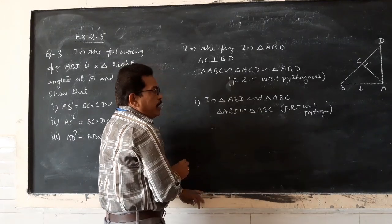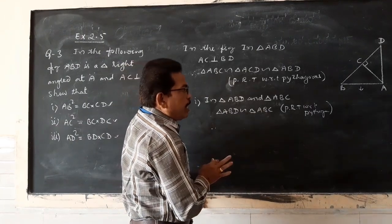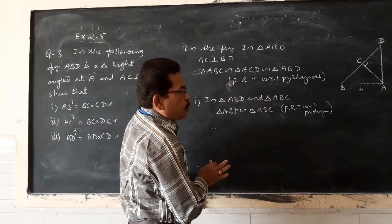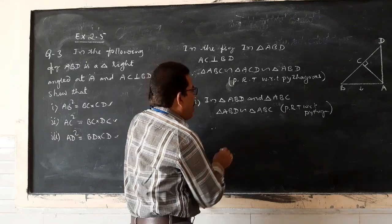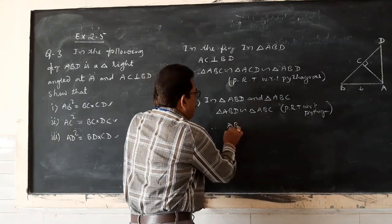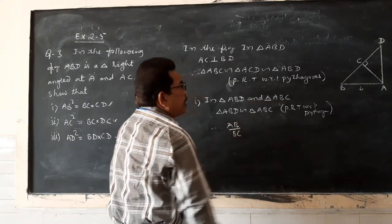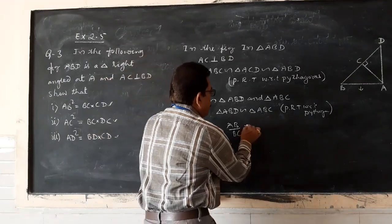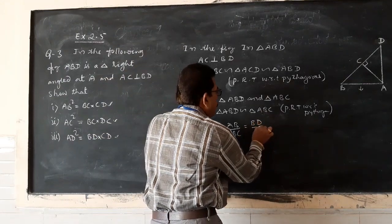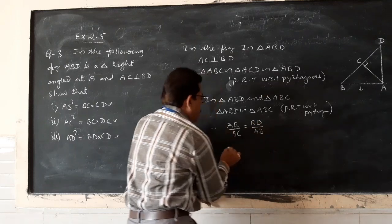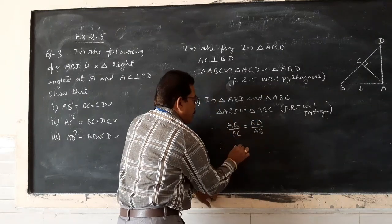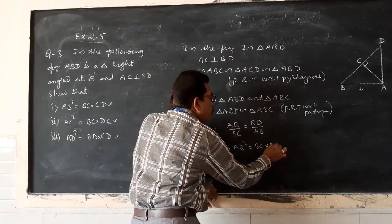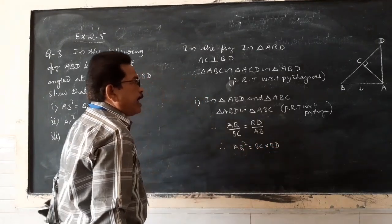Therefore, if two triangles are similar, the corresponding sides are proportional. Therefore, AB by BC equals BD by AB. Cross-multiplying, AB² = BC·BD. This proves the first result.